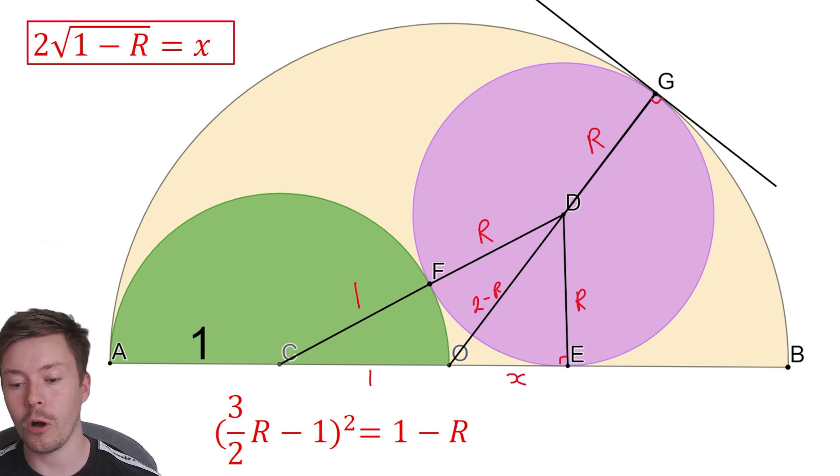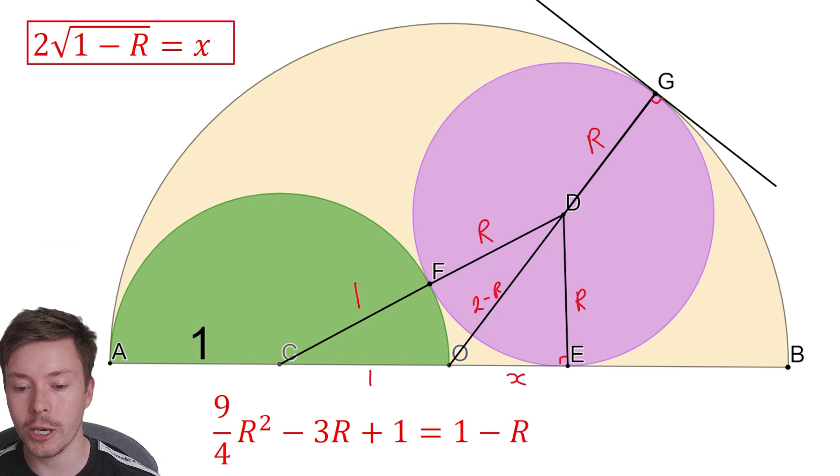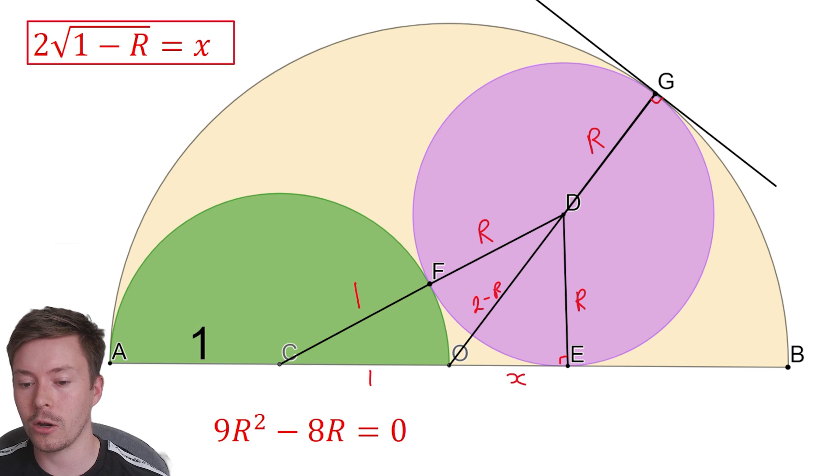From there, I'm going to expand the bracket again. I'm going to get 9 over 4, because 3 over 2 times 3 over 2 is 9 over 4. R squared minus 3R plus 1 equals 1 minus R. Once again, we're going to cancel out the 1s. We're going to add the R to both sides so it's equal to 0. Then we're going to factorize out the R. Actually, we could do that, but we could also times everything by 4, that might make it easier first. Let's times everything by 4. We get 9R squared minus 8R equals 0.